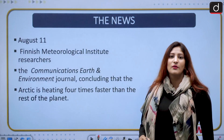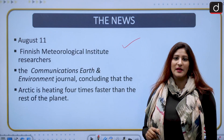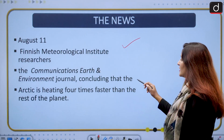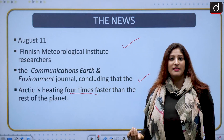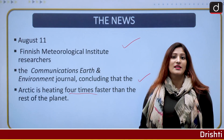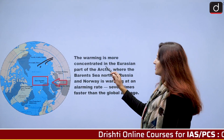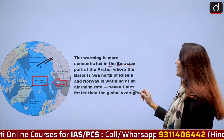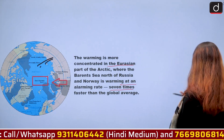First, let us look at the research details. On August 11, a Finnish Meteorological Institute research report was published in the Communications Earth and Environment Journal. It states that the Arctic is heating four times faster than the rest of the planet. The warming is more concentrated in the Eurasian part of the Arctic, specifically in the Barents and Kara Sea belt north of Norway, which is warming at seven times faster than the global average.